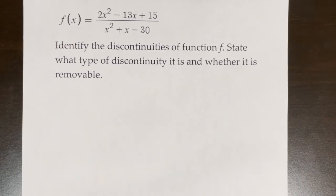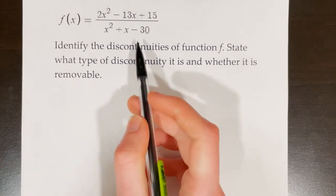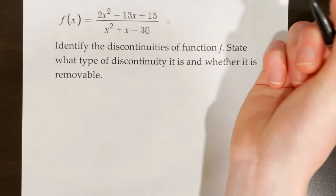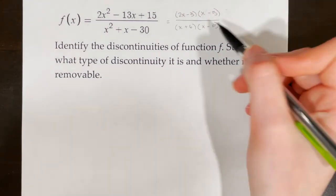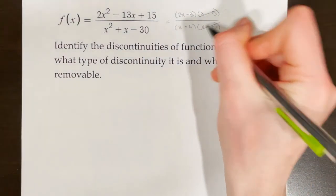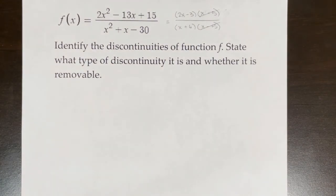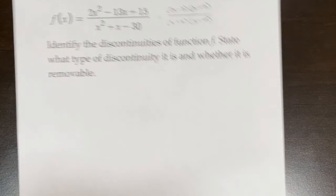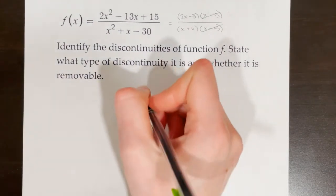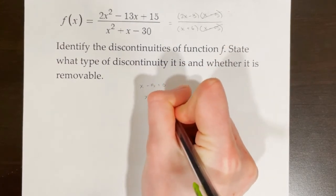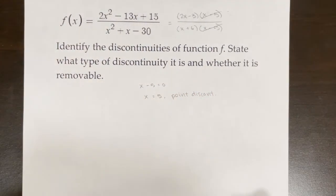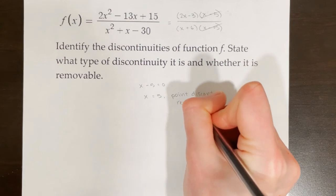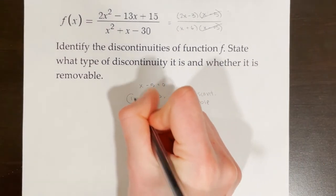Here we're asked to identify the discontinuities of function f, state what type each is, and whether it is removable. When I see a rational function, my instinct is always to factor. After factoring, I see a common factor in the top and bottom — x minus 5. Canceling that out tells me there is a hole, also known as a point discontinuity, at that value: x minus 5 equals 0, so at x equals 5 we have a point discontinuity. Point discontinuities are removable.